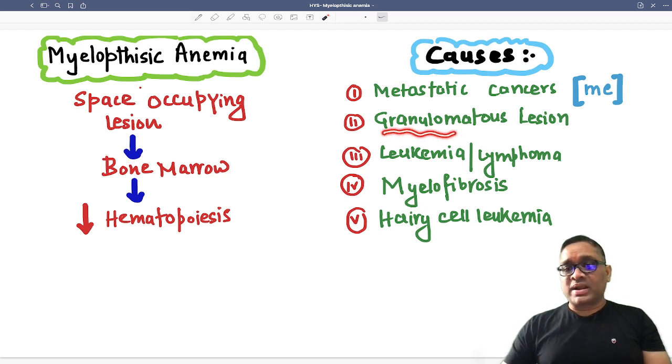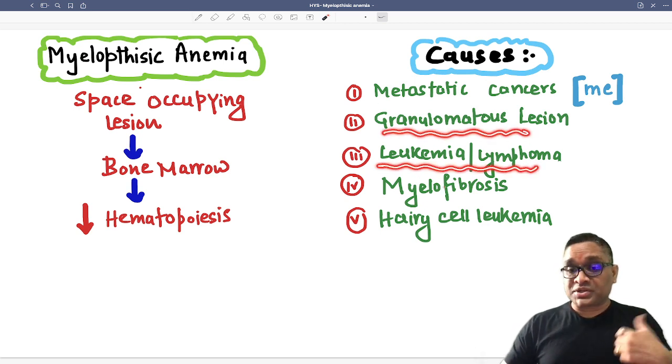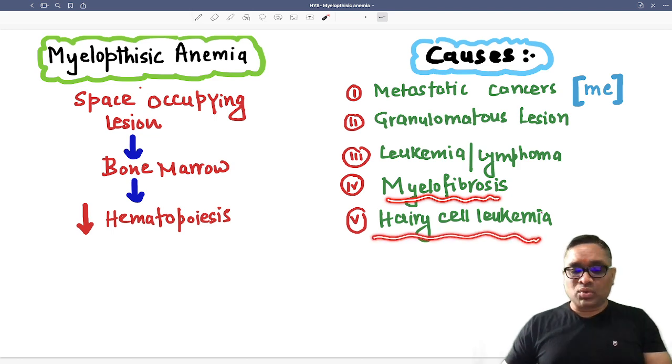Other causes are granulomatous lesions like TB, leukemia, lymphoma infiltration of the bone marrow, myelofibrosis, and hairy cell leukemia.